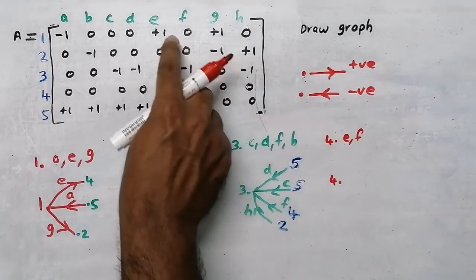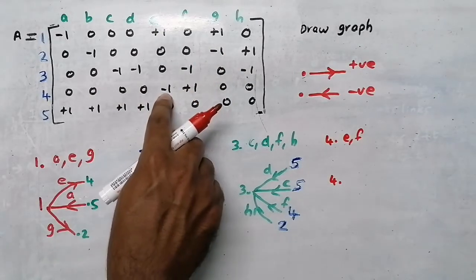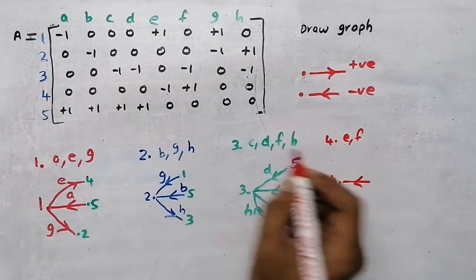Branch e at node 4 is negative - negative means branch is coming to the node.